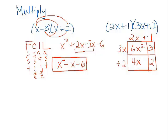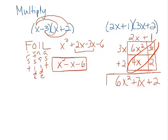Now let's combine our like terms here. We get 6x squared. These are like terms. They add up to 7x, and then we have the plus 2. So there's our reminder about how to multiply.